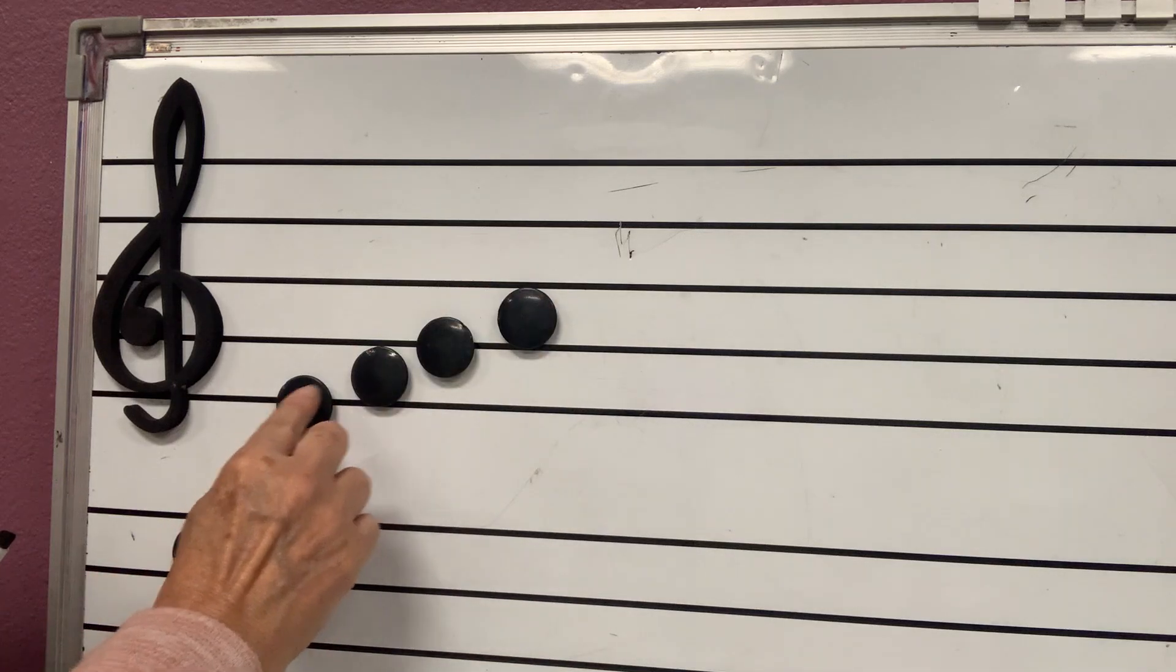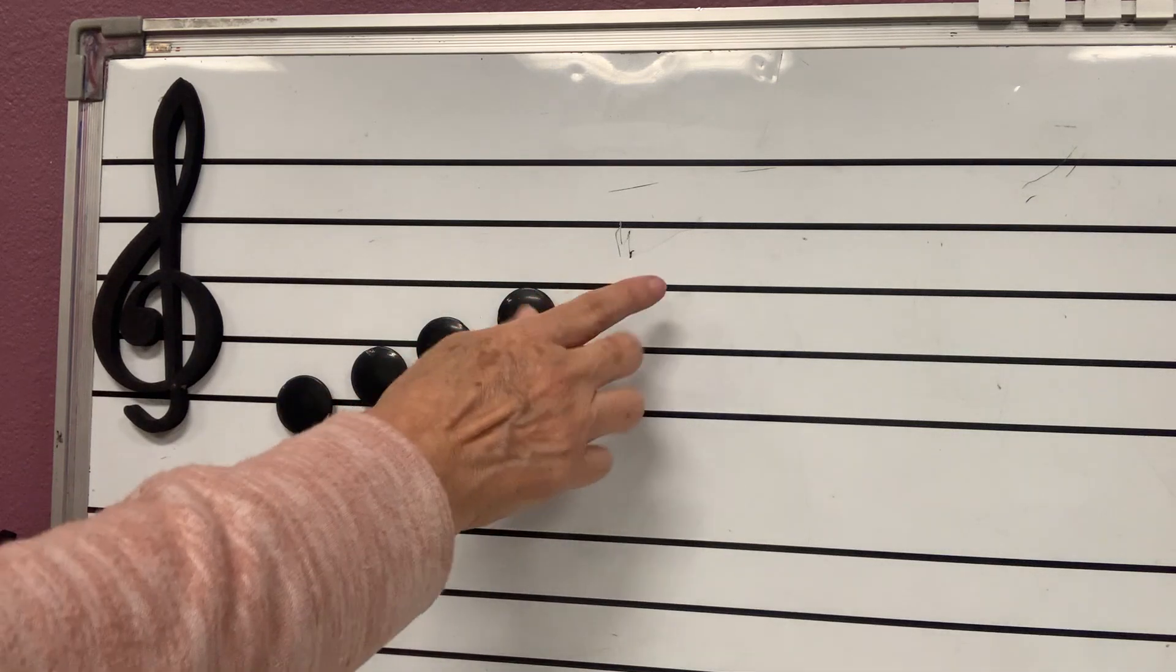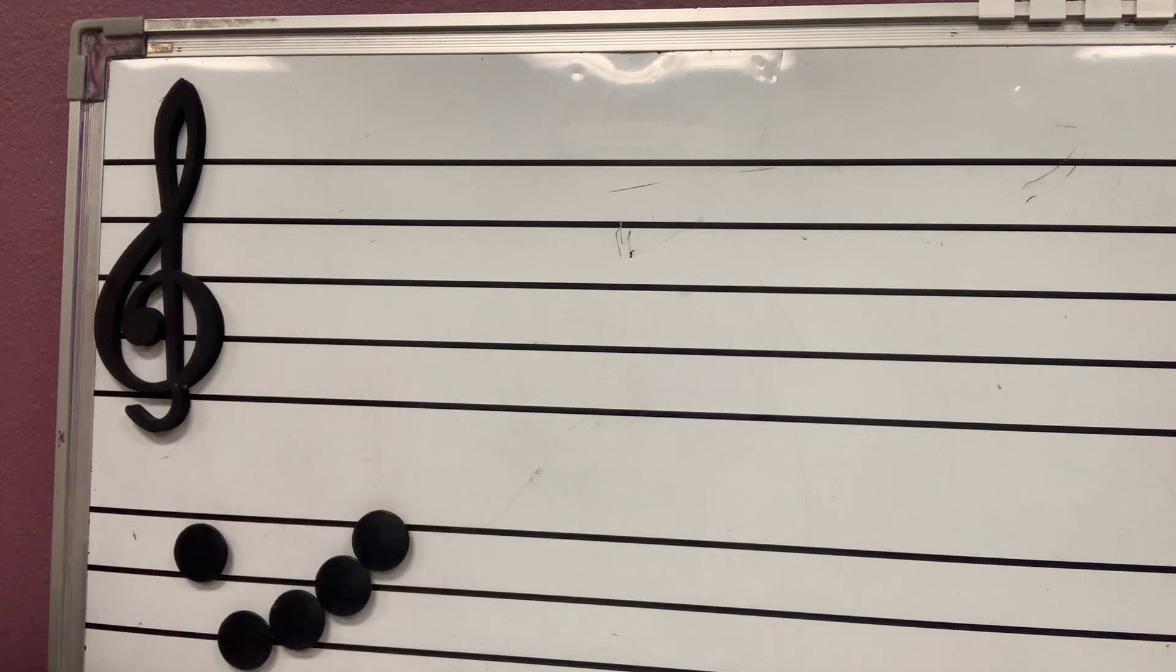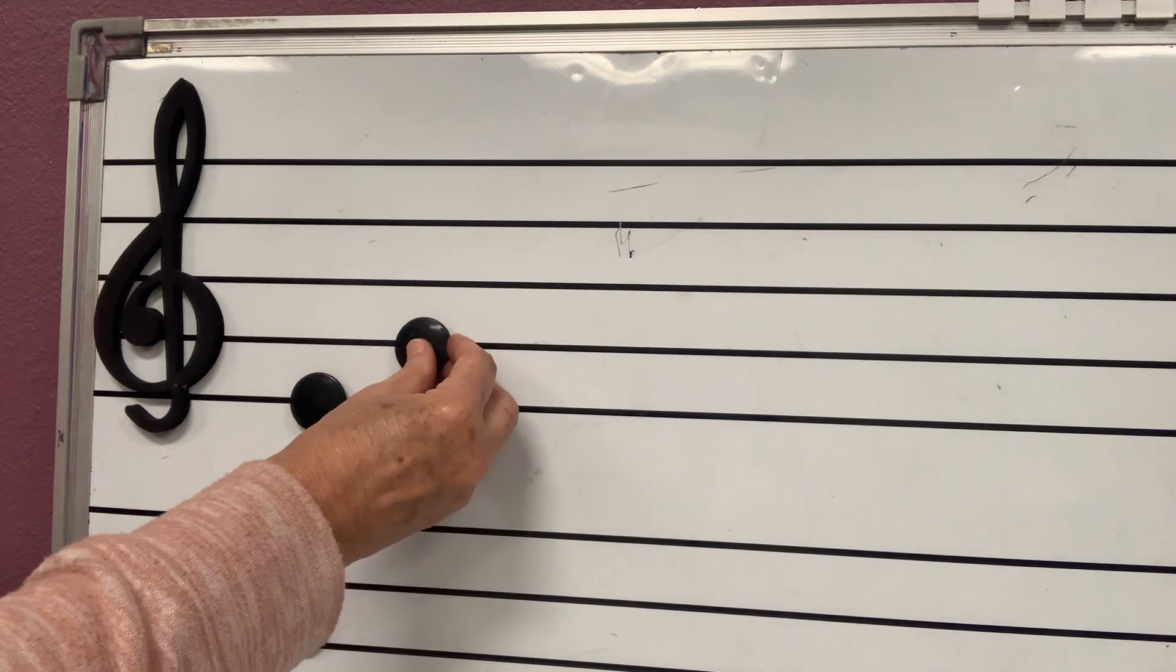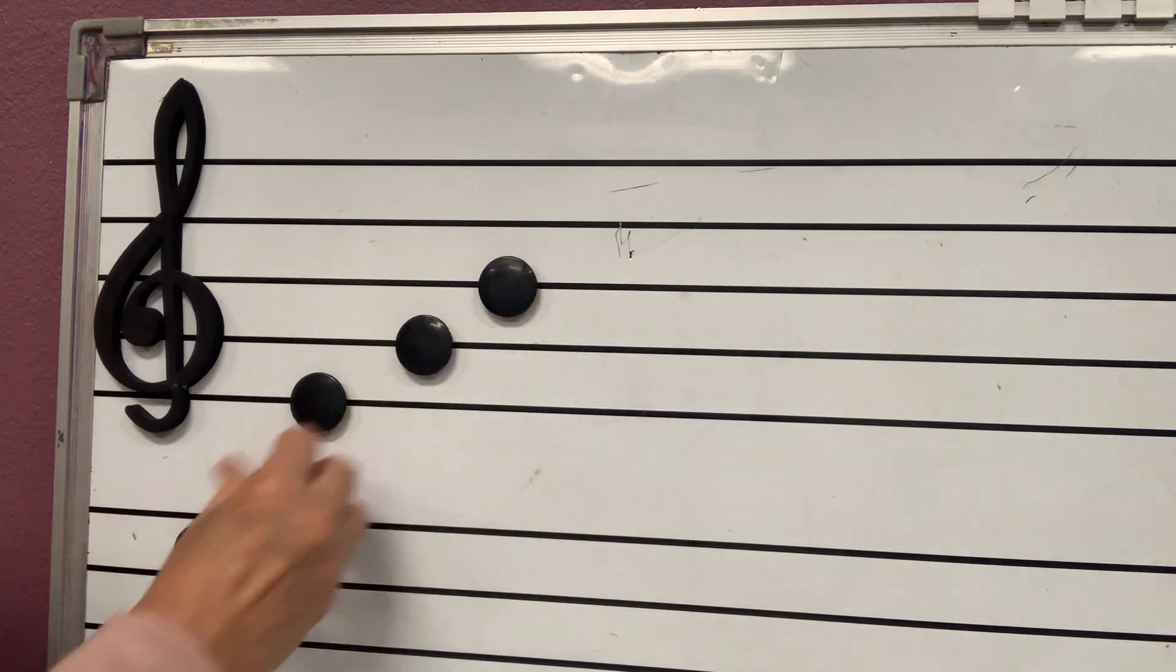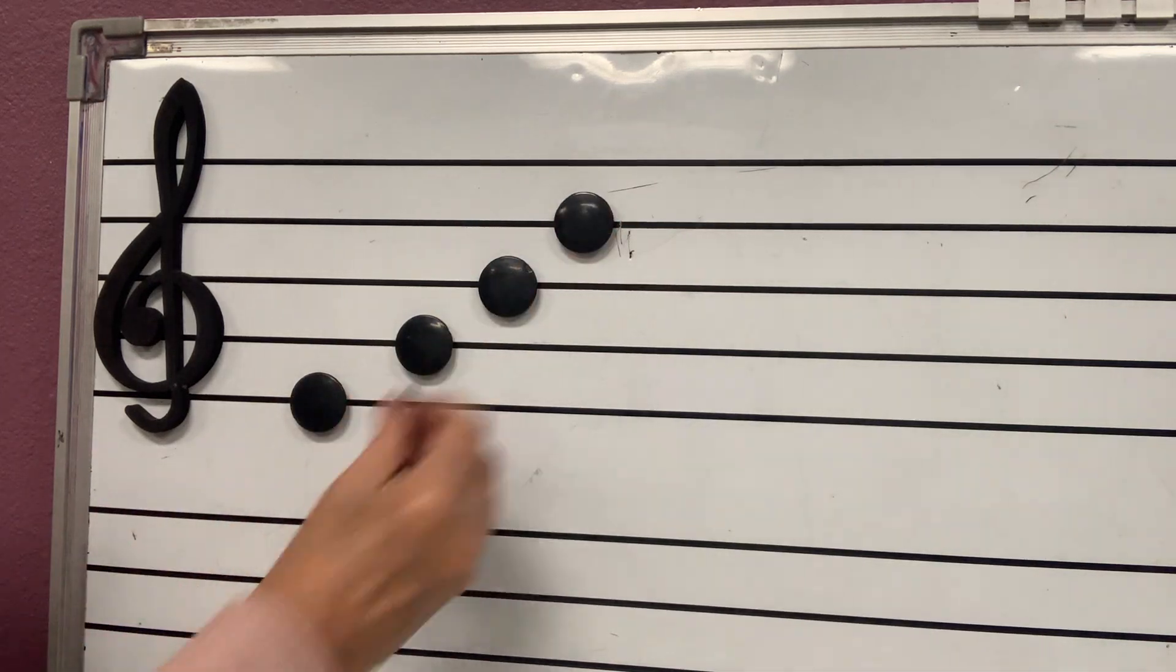So if this is E, this is F, G, A, B. But to help us remember the names of the notes, the letters for the notes, we will use lines and spaces. I'm going to put a note on each one of the lines. Okay, how many lines are here? Let's count them.